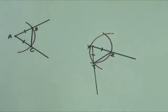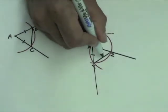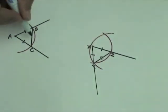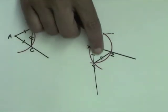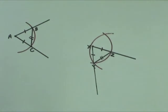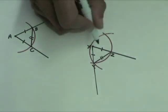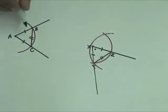YZ was constructed using the same compass width as BC, so YZ is congruent to BC. So triangles ABC and XYZ are congruent by the side-side-side congruence postulate. Since corresponding parts of congruent triangles are congruent, angles X and A must have the same measure.